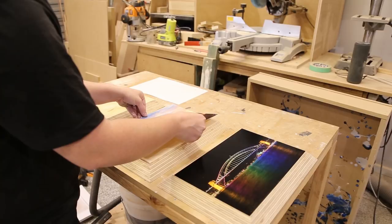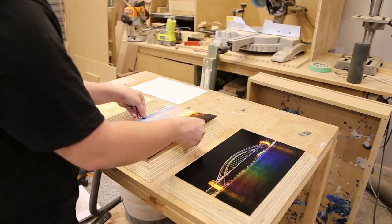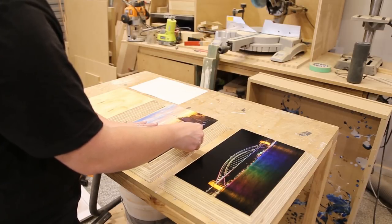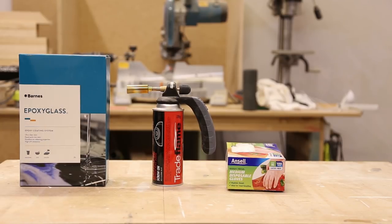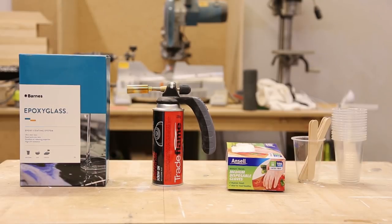Now I'll run over what you need for the resining and this will apply to all the frames. The things you will need are resin, today I'm using Barnes epoxy glass, a butane torch, disposable gloves, paddle pop sticks and plastic cups.